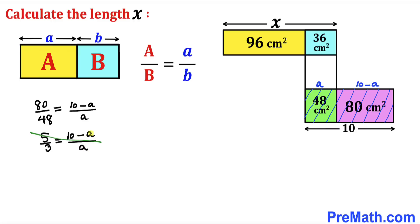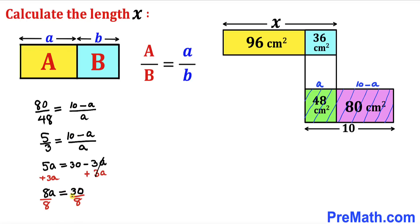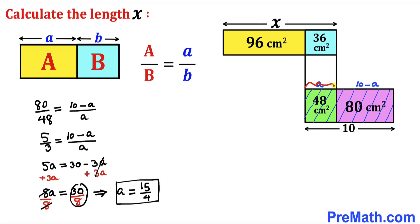Cross multiplying gives us 5a = 3(10 − a), which distributes to 5a = 30 − 3a. Adding 3a to both sides gives 8a = 30. Dividing both sides by 8, a equals 15/4 centimeters.